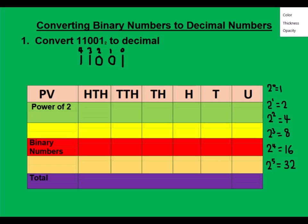Once you're done with this, go to the table of the power of two. How many numbers do we have? One, two, three, four, five. So I'm going to write five twos here. Then I'm going to put the powers on the twos: zero, one, two, three, and four.